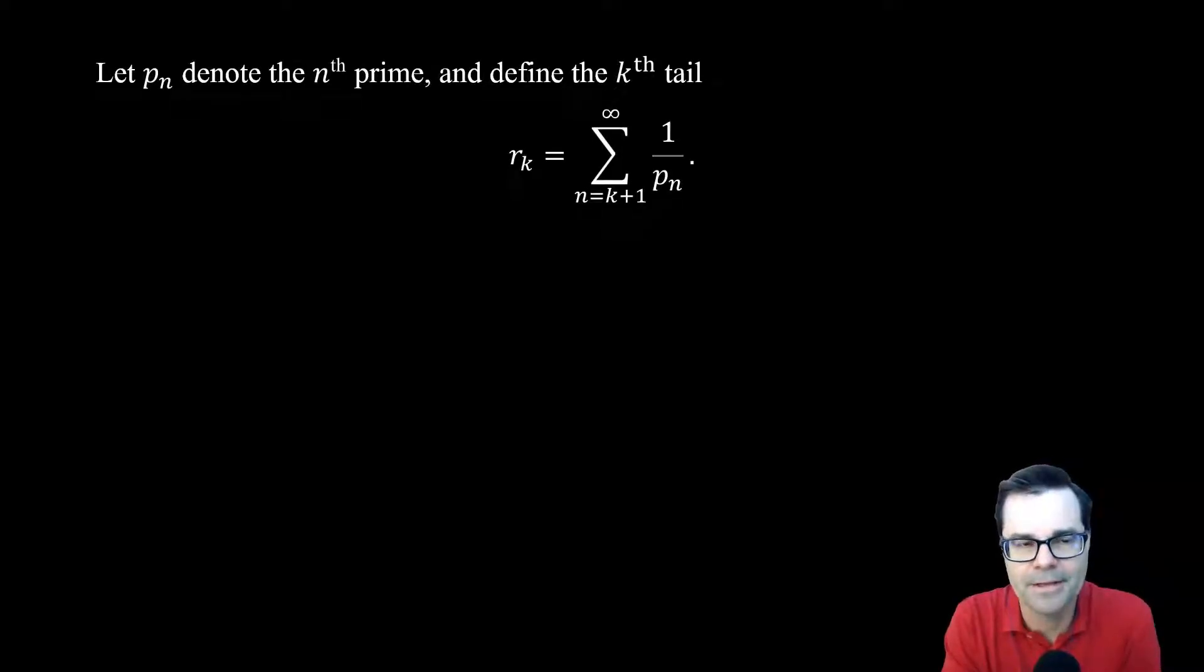So the idea behind this proof is to look at the tail of the series. Chop off the first few terms and just look at past a certain point. And what we're going to do is show that these tails have to have at least a certain magnitude.